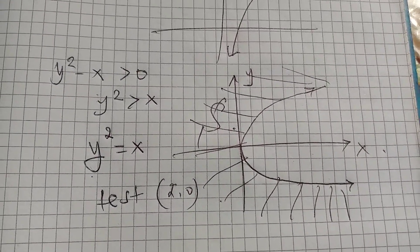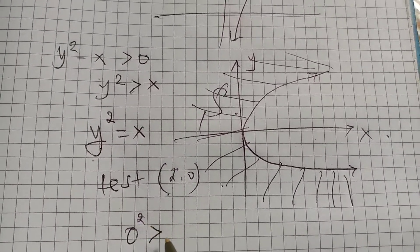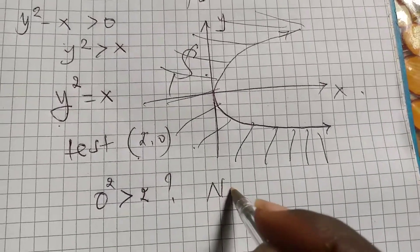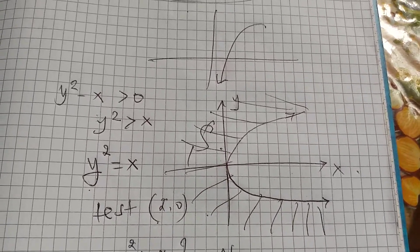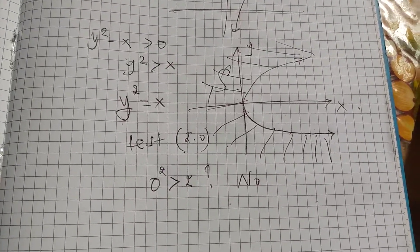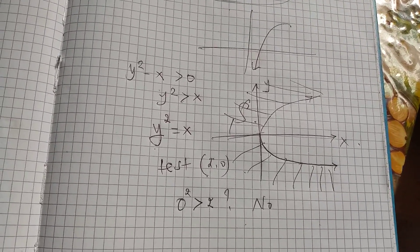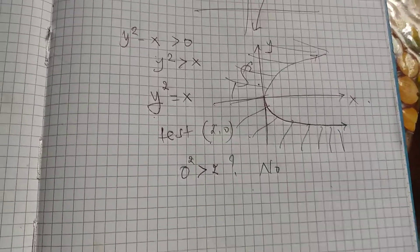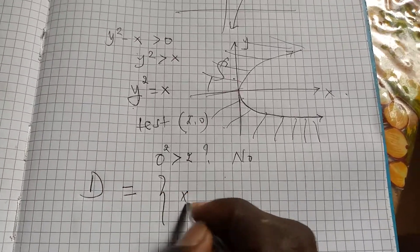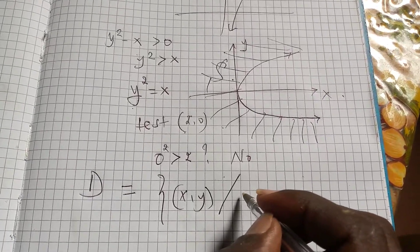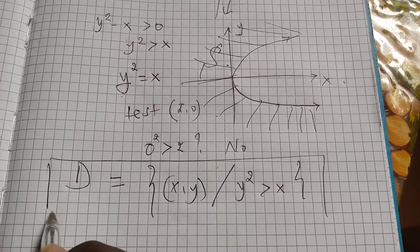Using the strict inequality test: is 0² greater than 2? No — so the solution is on the outer part of the curve, as stated. Therefore, the domain of this function is the set of all (x, y) except where y² is greater than x. This is the domain of definition for this function.